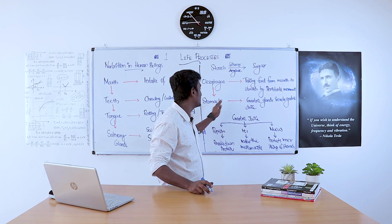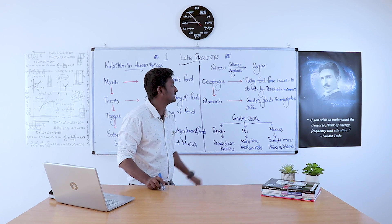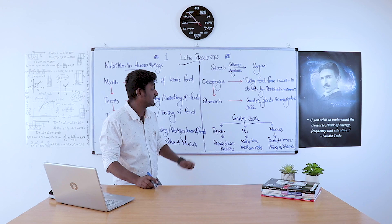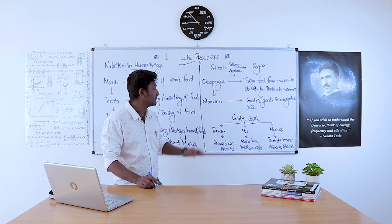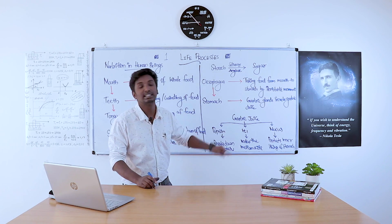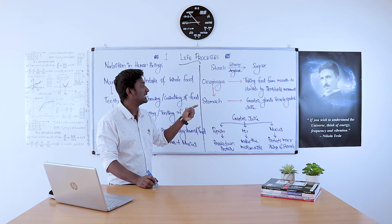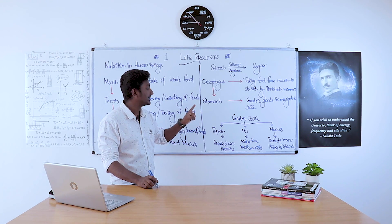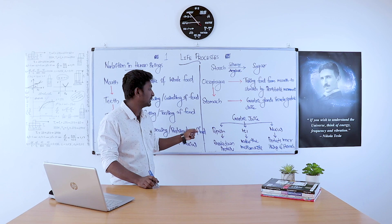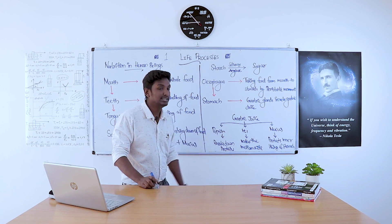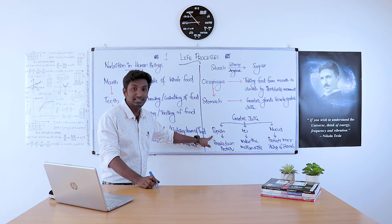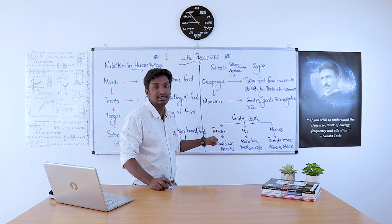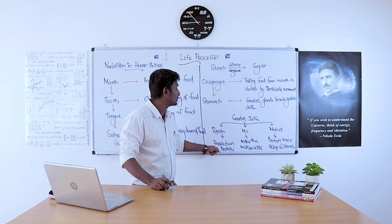The stomach contains gastric glands, which secrete gastric juice. Gastric juice contains pepsin, HCl, and mucus. Pepsin is an enzyme which helps in the breakdown of proteins.